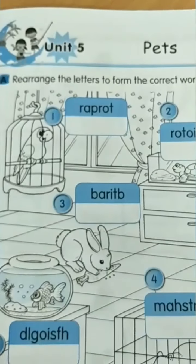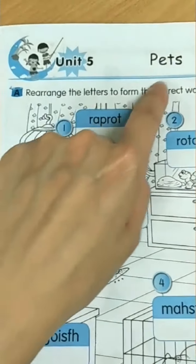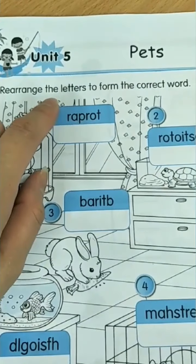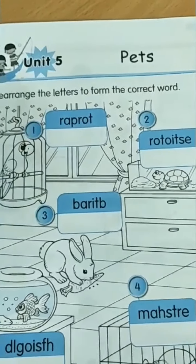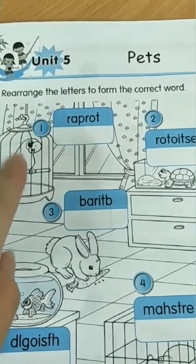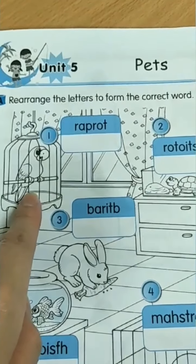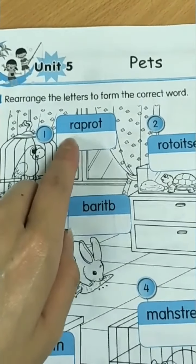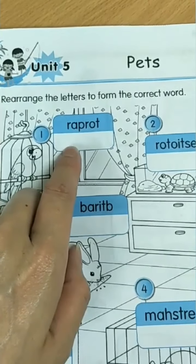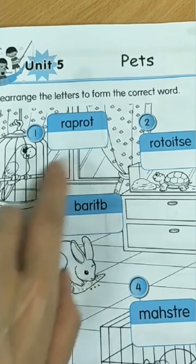Now let us look into unit 5. Pets. Rearrange the letters to form the correct words. Now look into the picture. Number 1, this is a parrot. Do you know how to spell parrot? Parrot. P-A-R-R-O-T. Parrot.